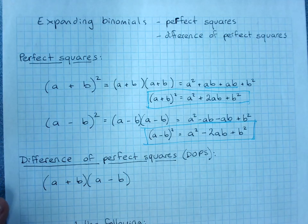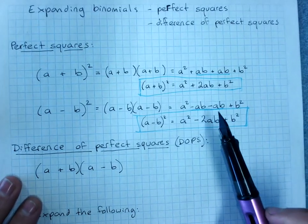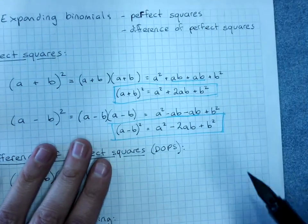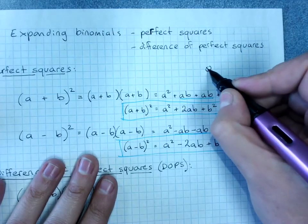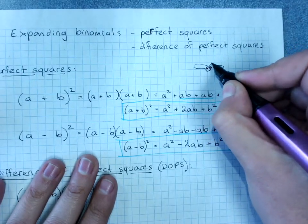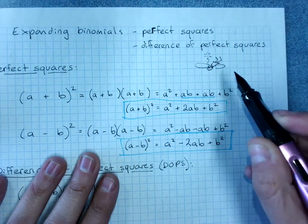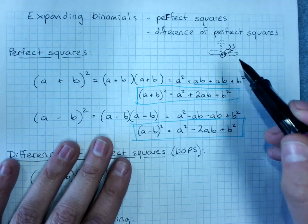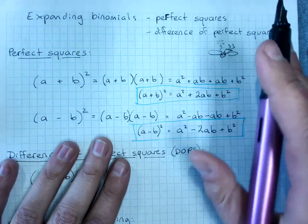Now before I get too carried away with difference of perfect squares, here is a perfect squares dead fairy warning. Here is your official dead fairy. A dead fairy warning, of course, being I have told you that this mistake is likely to happen and that it is wrong. Do not make this mistake.